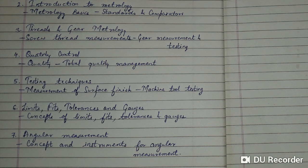Priority 6 is Limits, Fits, Tolerances and Gauges, covering Concepts of Limits, Fits, Tolerances, Gauges, Selective Assembly, and different types of fits. Priority 7 is Angular Measurement, covering concepts and instruments for Angular Measurement.